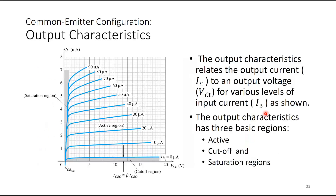The output characteristics relate the output current IC to output voltage VCE for various levels of input current IB. IB is the fixed value set for the sweep of VCE versus IC. As you sweep VCE, you measure IC for different fixed values of IB — this is called a family of curves. The output characteristics has three basic regions: the cutoff region, the saturation region, and the active region in the middle.